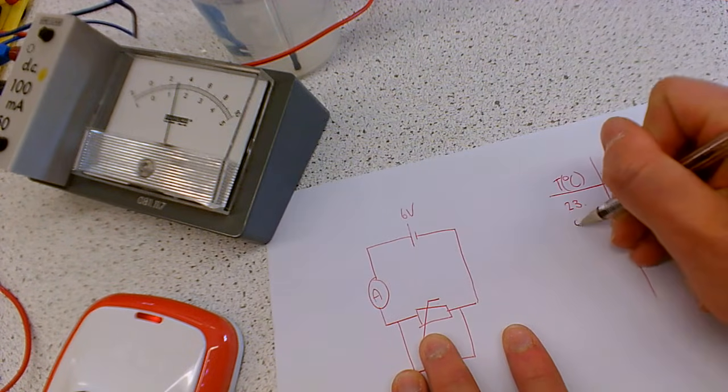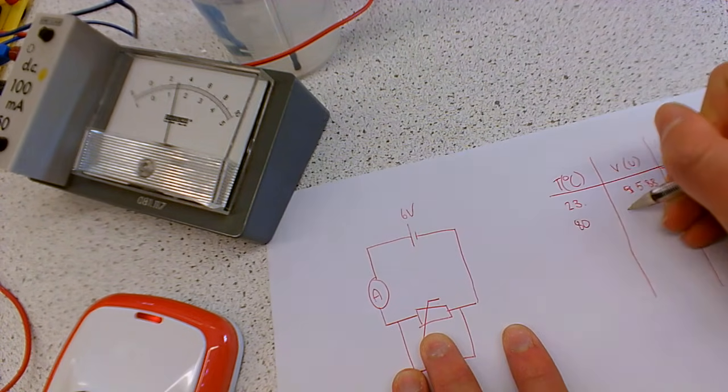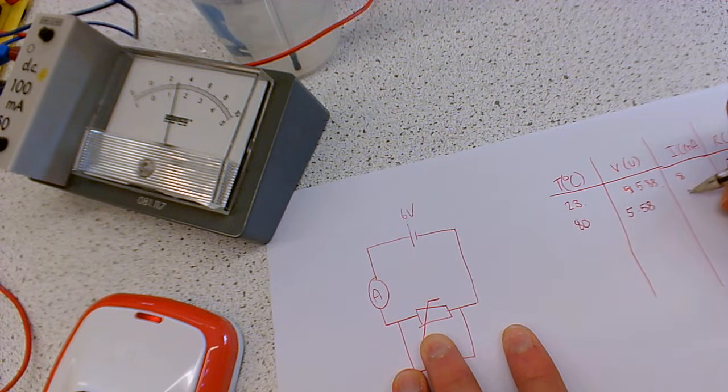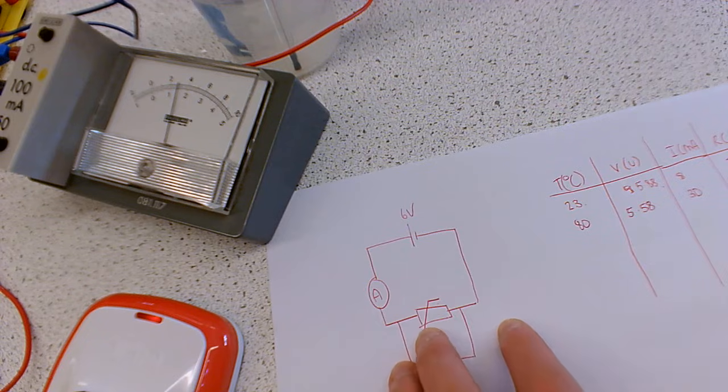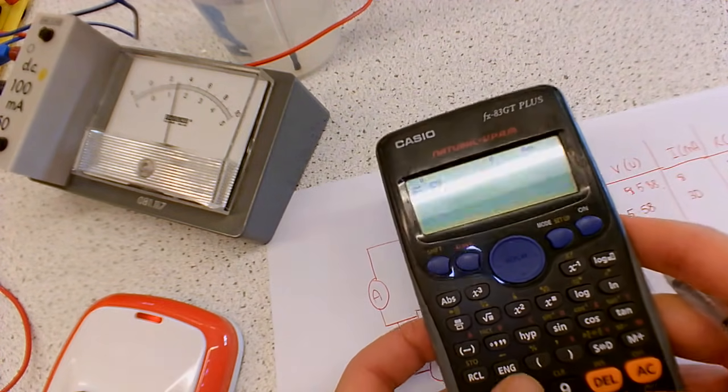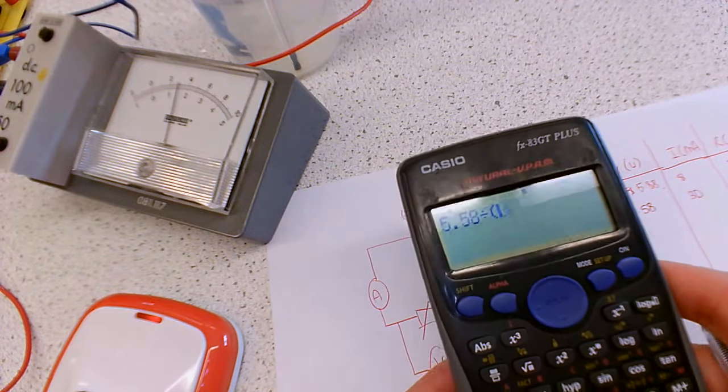So a temperature of 80 degrees, we've got a potential difference of 5.58, and we've got a current of 30 milliamps, which we can then calculate the resistance of. We're going to do 5.58 divided by, I'm going to open brackets here,